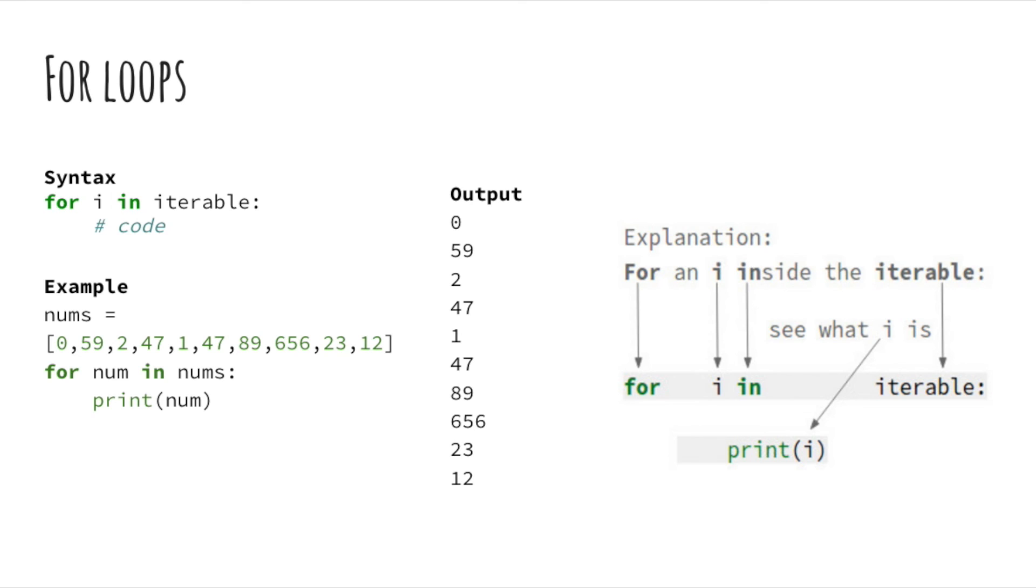Whew! We made it! Now that you know what iterables are, this should be smooth sailing ahead. Alright, for loops are different from while loops in that they don't need something to be true in order to run. All you need is a defined iterable, whether it be a list, array, or range object, and you can create your own for loop.